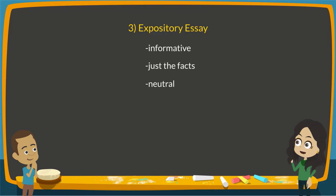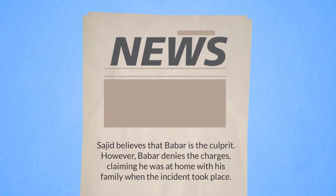But if the subject of the essay does include opinions or emotions, the author presents both sides in a balanced way. For example, look at these lines from a news article: 'Sajid believes that Babur is the culprit. However, Babur denies the charges, claiming he was at home with his family when the incident took place.' The author presents both sides as opinions and neither as facts.